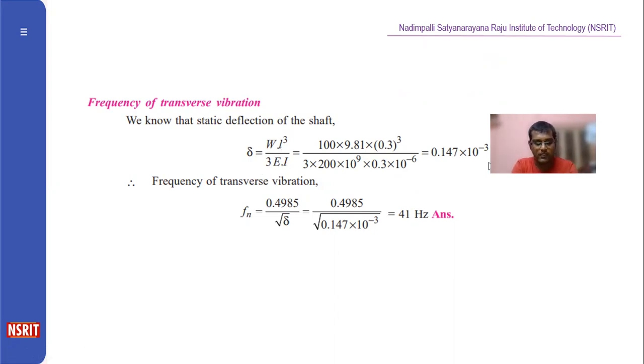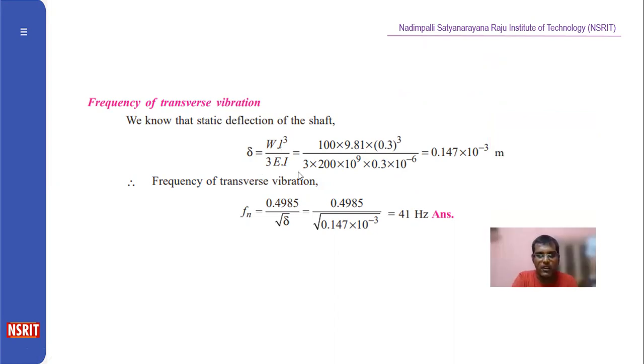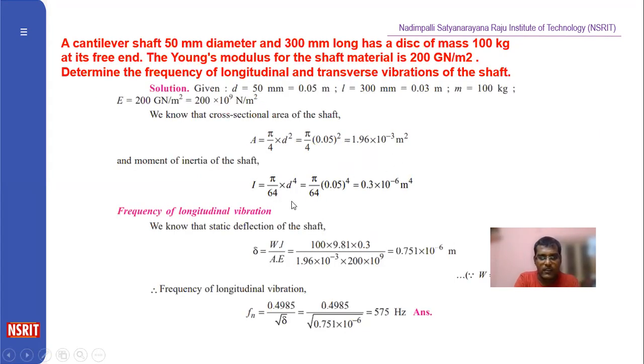W is the load, that is mg, mass into g. L is 0.3. 3E into I, I is the moment of inertia. That is pi d⁴/64.